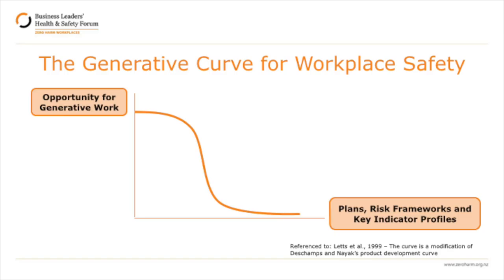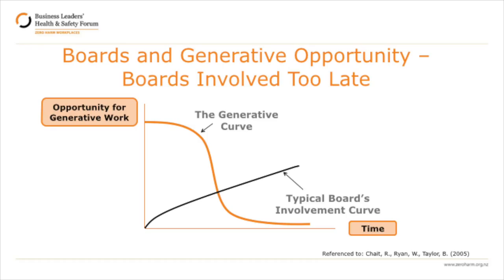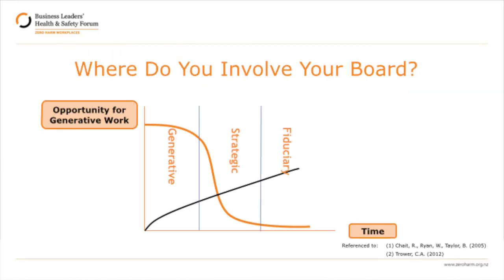This is really a thought experiment. This slide shows the generative curve, and it's actually borrowed out of product development, which has a lot of experience in this. You'll see how there's a time for generativity and then it drops dramatically. If you look at what happens in most boards in a governance situation, the time at which the board gets involved — the typical board involvement curve — is actually very late in the generative cycle. So most of the opportunity for generativity is lost.